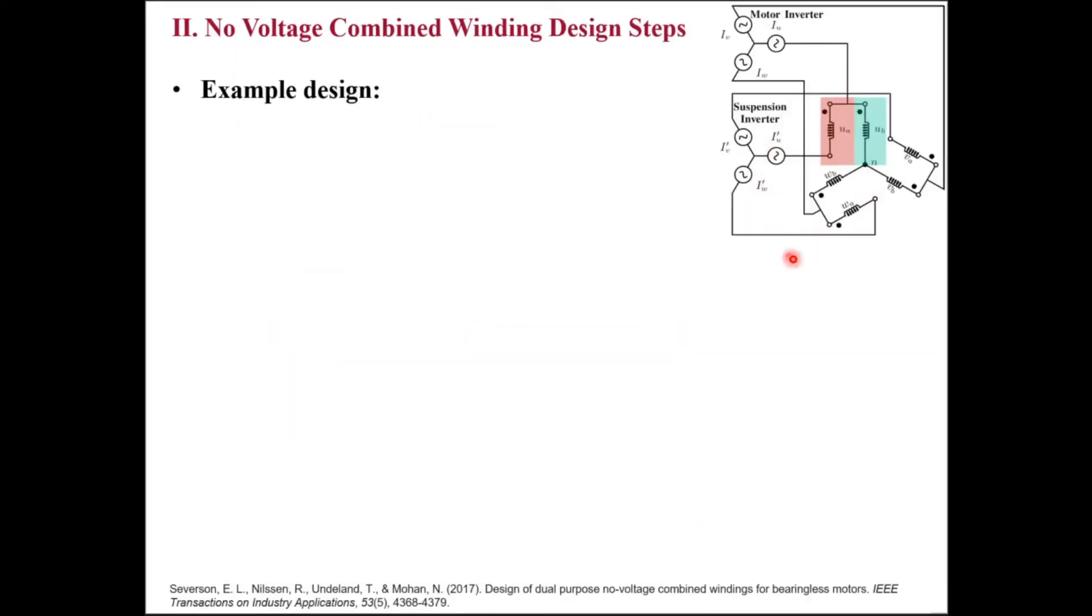This is one kind of power electronics for no-voltage combined windings, where no-voltage means the suspension inverter will see no back EMF due to torque excitation, and combined means the same winding will be used for both torque and suspension purposes. For each slot pole combination, the winding design process determines whether a coil should belong to the red coil group or the green coil group for each phase.